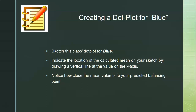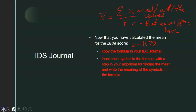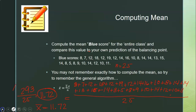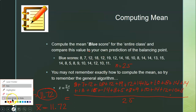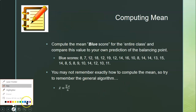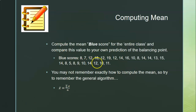Now we're going to create a dot plot for the blue scores. Sketch the class's dot plot for blue and indicate the location of the calculated mean by drawing a vertical line at that value on the x-axis. Notice how close the mean value is to your predicted balancing point. To build the dot plot, find the lowest amount — which is five — and the highest — which is 19 — and span your number line from five to 19.